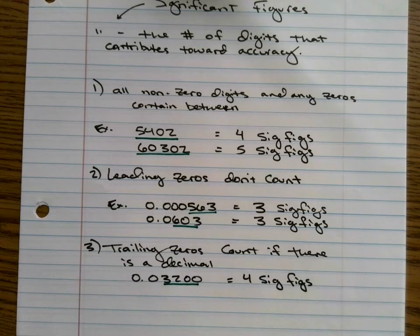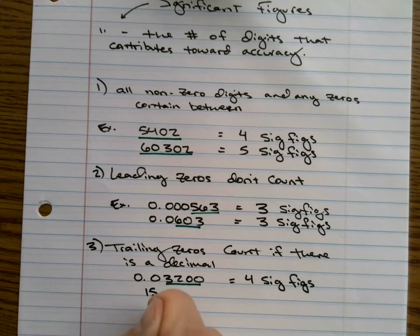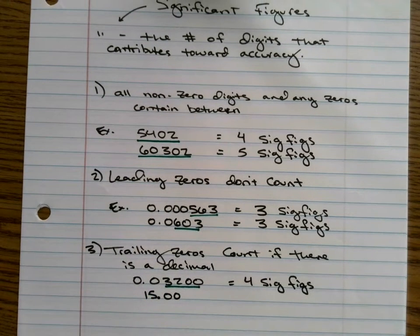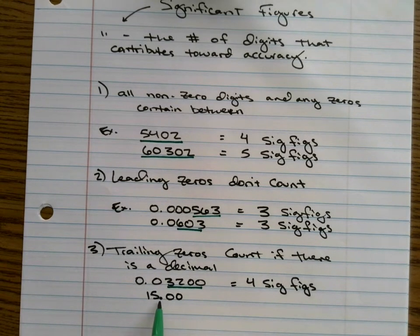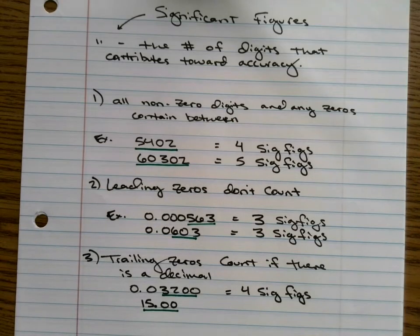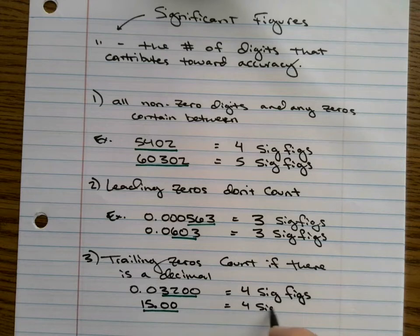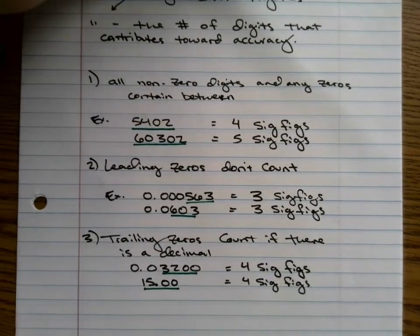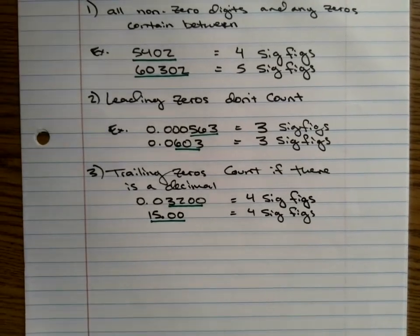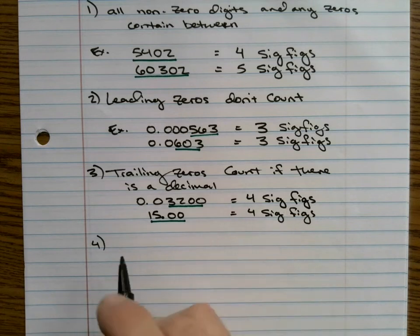The next one I'll do is 15.00. That's a period there. Because they're trailing and there is a decimal there, these all count. So it's going to be four sig figs. These are both four sig figs.